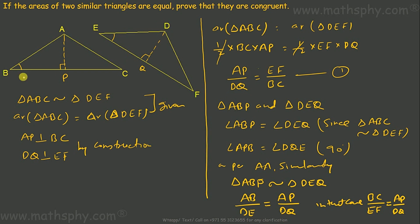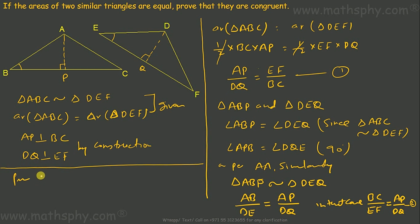From equation one, AP over DQ equals EF over BC. From equation two, AP over DQ equals BC over EF. Combining equations one and two, we get EF over BC equals BC over EF.